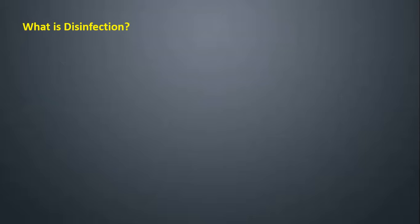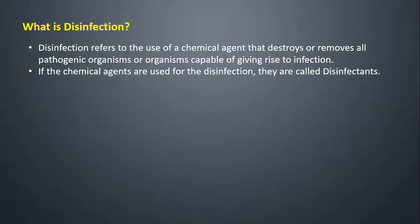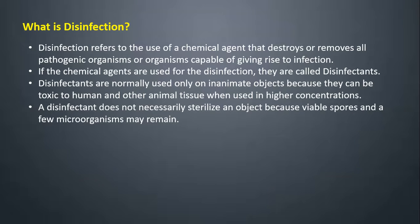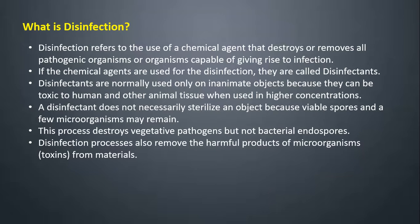Disinfection refers to the use of a chemical agent that destroys or removes all pathogenic organisms or organisms capable of giving rise to infection. If chemical agents are used for disinfection, they are called disinfectants. Disinfectants are normally used only on inanimate objects because they can be toxic to human and other animal tissue when used in higher concentrations. A disinfectant does not necessarily sterilize an object because viable spores and a few microorganisms may remain. This process destroys vegetative pathogens but not bacterial endospores. Disinfection processes also remove harmful products of microorganisms — toxins — from materials.